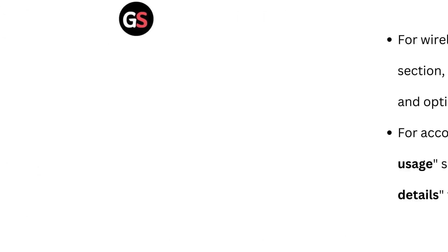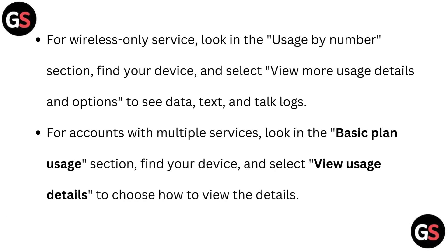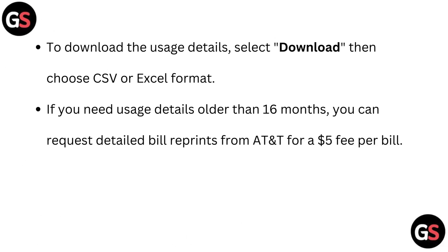For wireless-only service, look in the 'Usage by Number' section, find your device, and select 'View More Usage Details and Options' to see data, texts, and talk logs. For accounts with multiple services, look in the 'Basic Plan Usage' section, find your device, and select 'View Usage Details' to choose how to view the details.